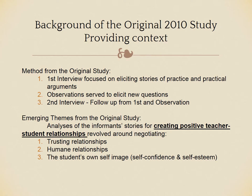In the original study, the analysis of the informant stories produced three overarching themes for creating positive teacher-student relationships. These themes revolved around negotiating trusting relationships with students, humane relationships with students, and the students' own self-image as critical.